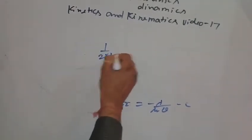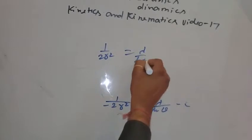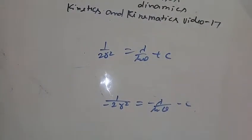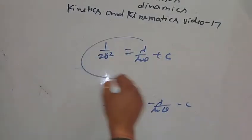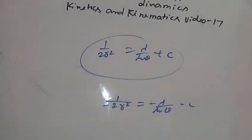Multiplying both sides by minus 2, we get 1 upon 2r squared equals lambda upon mu theta plus c.